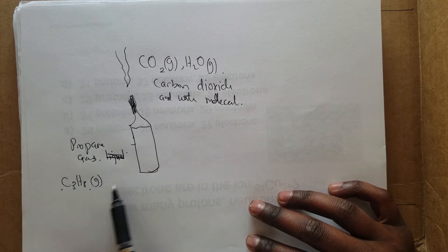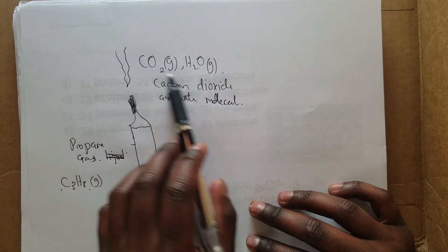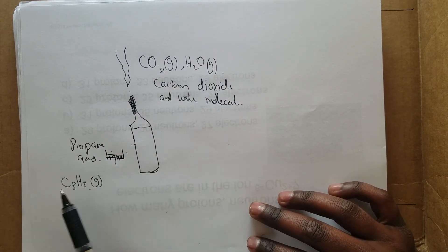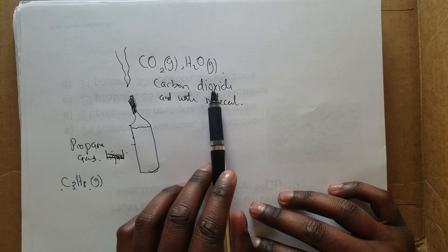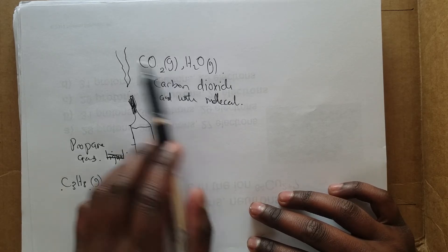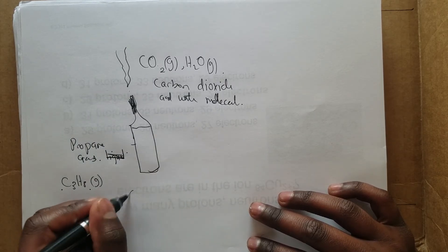You get a whole different substance altogether—different substances from propane to carbon dioxide and water molecules. That's an example of a chemical change.